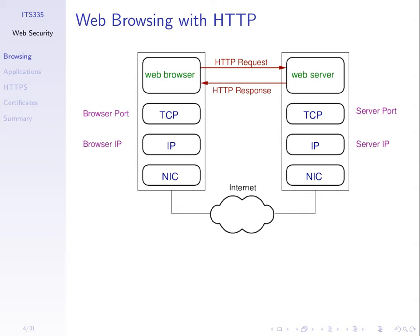To send a packet between the computer using the browser and the server, we need to know the IP addresses. Assuming the browser knows the IP address of the server and the port number is 80, it can create an IP datagram with the destination address of the server and destination port 80. That packet will be delivered across the internet to the correct server and eventually to the web server application, which will send a response.